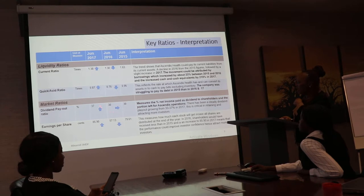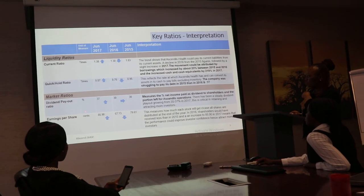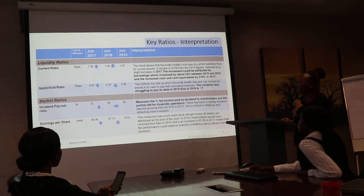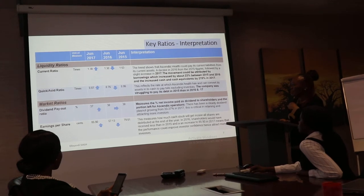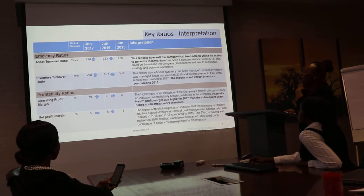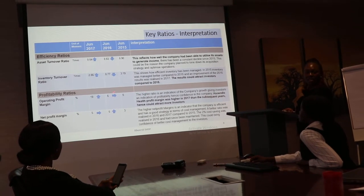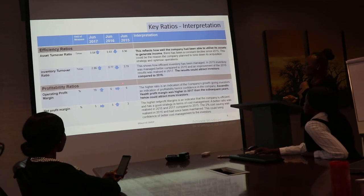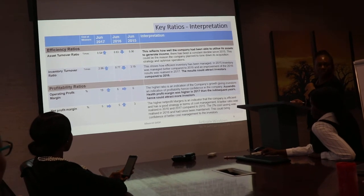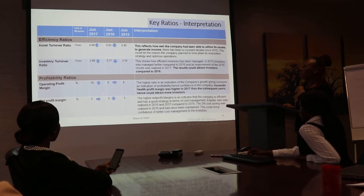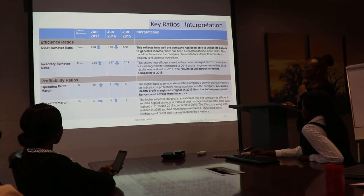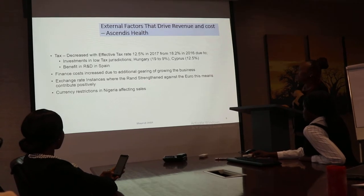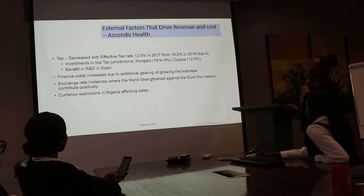The other trends, especially the dividend payout, remained flat between the two years and increased marginally over 2017. The common trend of decreasing ratios between 2015 and 2016 is reflected here, with an increase over 2017, which reflects the growth achieved in 2017.